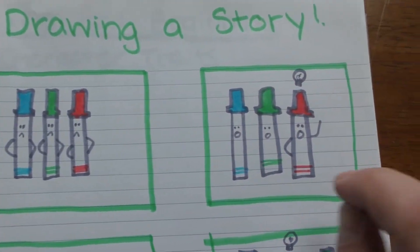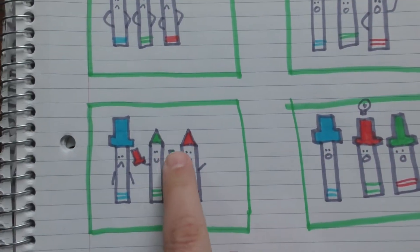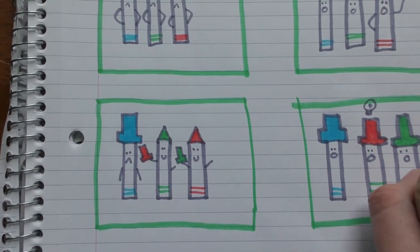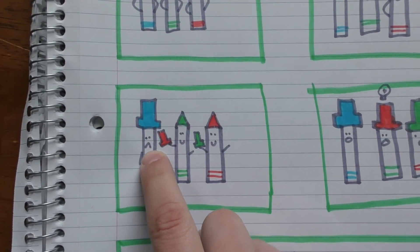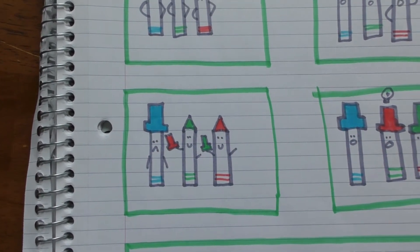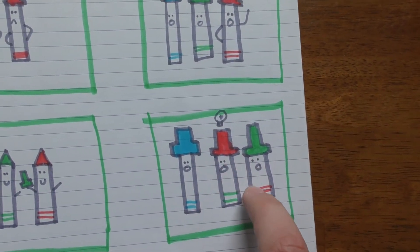Then red marker had an idea - his idea was to switch caps with green marker. But blue marker is still sad because he's still unhappy with his outfit. Then green marker, wearing red marker's cap, had an idea.